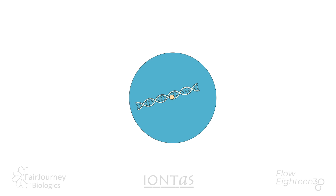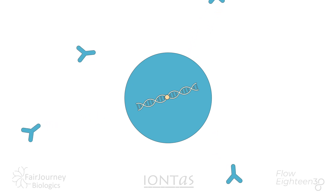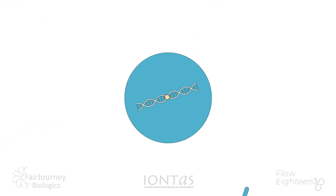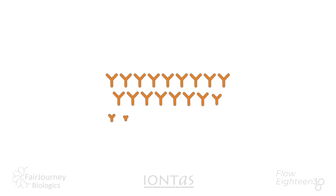We can recover the bound phage along with the antibody gene inside. And so in this way, the antibody gene is selected on the basis of the binding activity that it encodes. The antibody gene can be recovered from the phage and used to produce human antibodies in cultured cells at any volume we want.